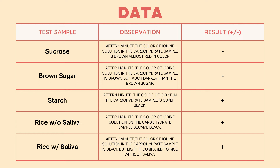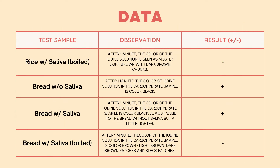After 1 minute, the color of iodine solution in the carbohydrate sample is black but lighter compared to rice without saliva, which concludes that there is a presence of carbohydrates in the test sample. Then, rice with saliva: after 1 minute, the color of iodine solution is seen as mostly light brown with dark brown chunks, which results in a negative presence of carbohydrates.